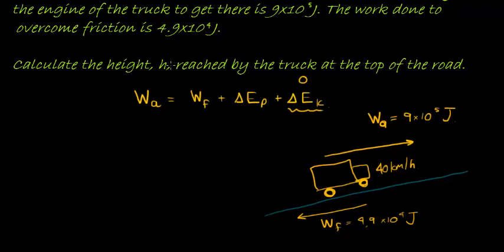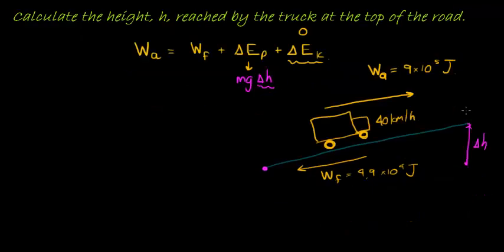The question asks us to calculate height. Where in our formula is height? It's in the change in potential energy, because ΔEₚ = mg(Δh). Since this is the bottom and that's the top, this change in height is going to be that variable. So let's work through this now.